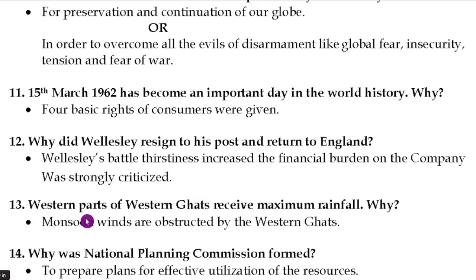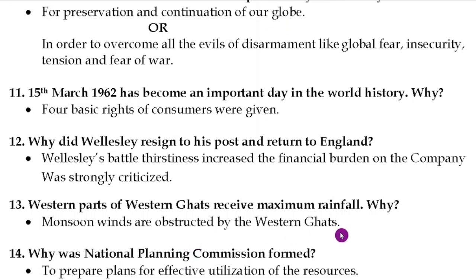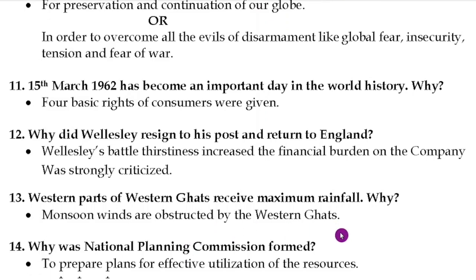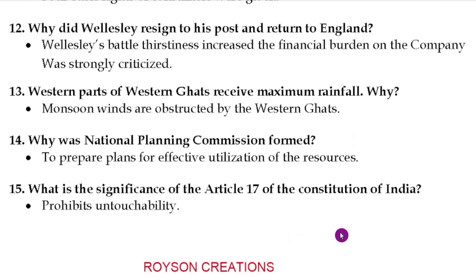Question number thirteen: western parts of the Western Ghats receive maximum rainfall — why? The answer is monsoon winds are obstructed by the Western Ghats. Question number fourteen: why was a national planning commission formed? The answer is to prepare plans for effective utilization of resources.